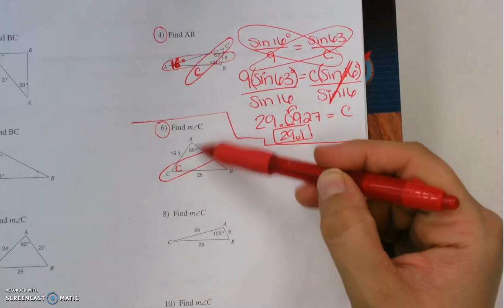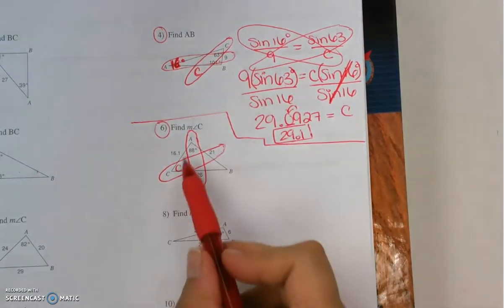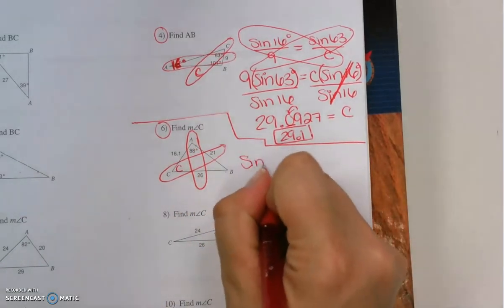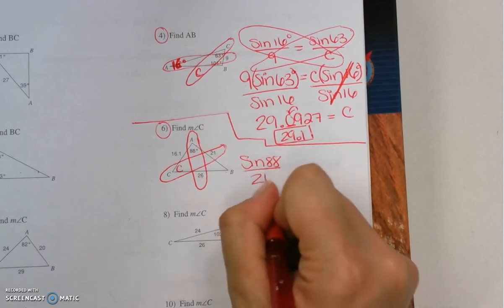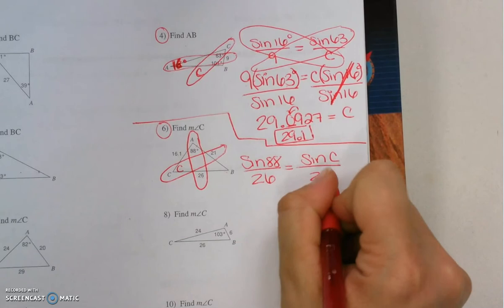However, A, I have both pieces of information. I have the angle and the side opposite it. So I have one, two, three out of the four pieces of information. Sine 88 is to side 26 as sine C is to side 21.